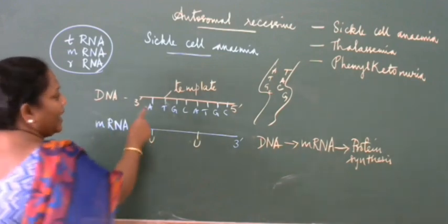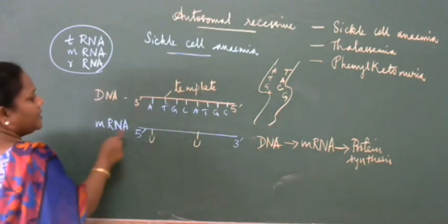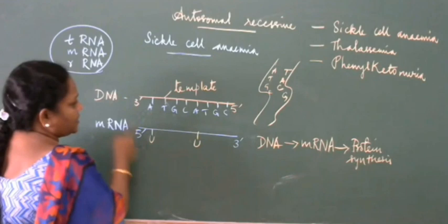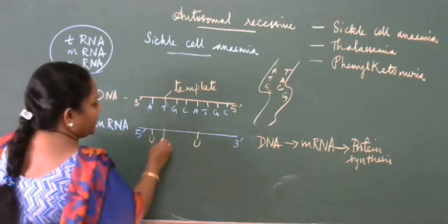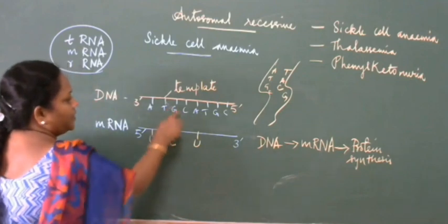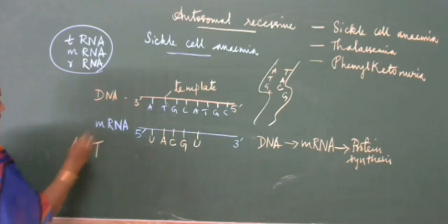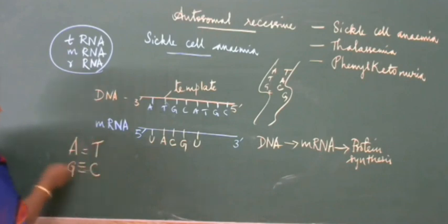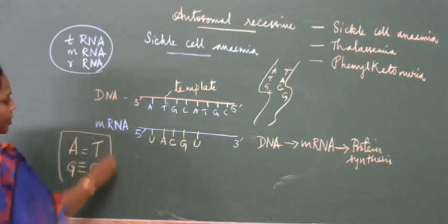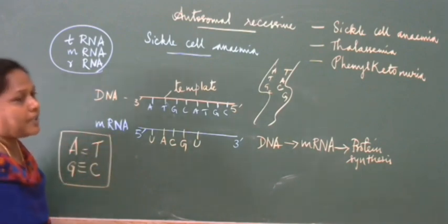In DNA: adenine, thymine, guanine, cytosine. In RNA: instead of thymine, uracil is present. The base pairing rules are: thymine pairs with adenine, guanine pairs with cytosine, and cytosine pairs with guanine. Adenine pairs with thymine — adenine and thymine have 2 hydrogen bonds; guanine and cytosine have 3 hydrogen bonds.